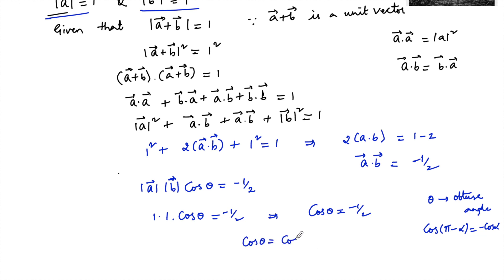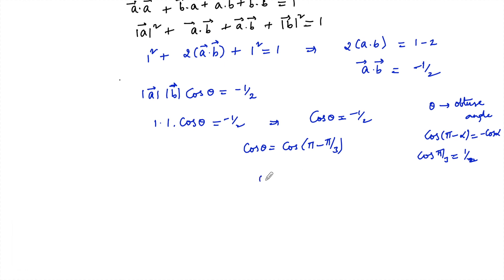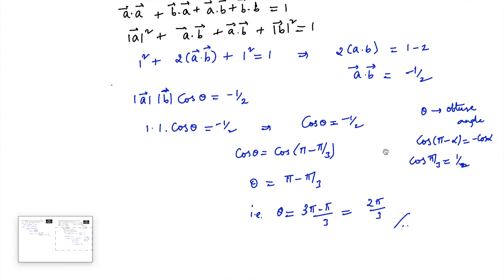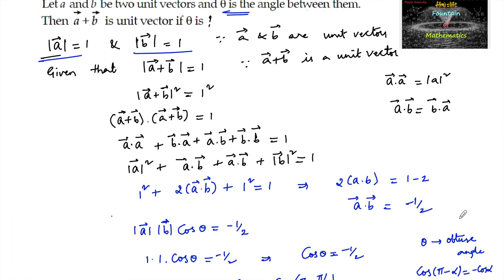We need cos theta equal to negative 1 by 2, which is negative cos(pi by 3) since cos(pi by 3) is 1 by 2. So taking alpha as pi by 3, we get cos(pi minus pi by 3), which implies theta equals pi minus pi by 3, that is theta equals 2 pi by 3. Therefore the angle between the two unit vectors a and b is 2 pi by 3, so that a plus b will become a unit vector.